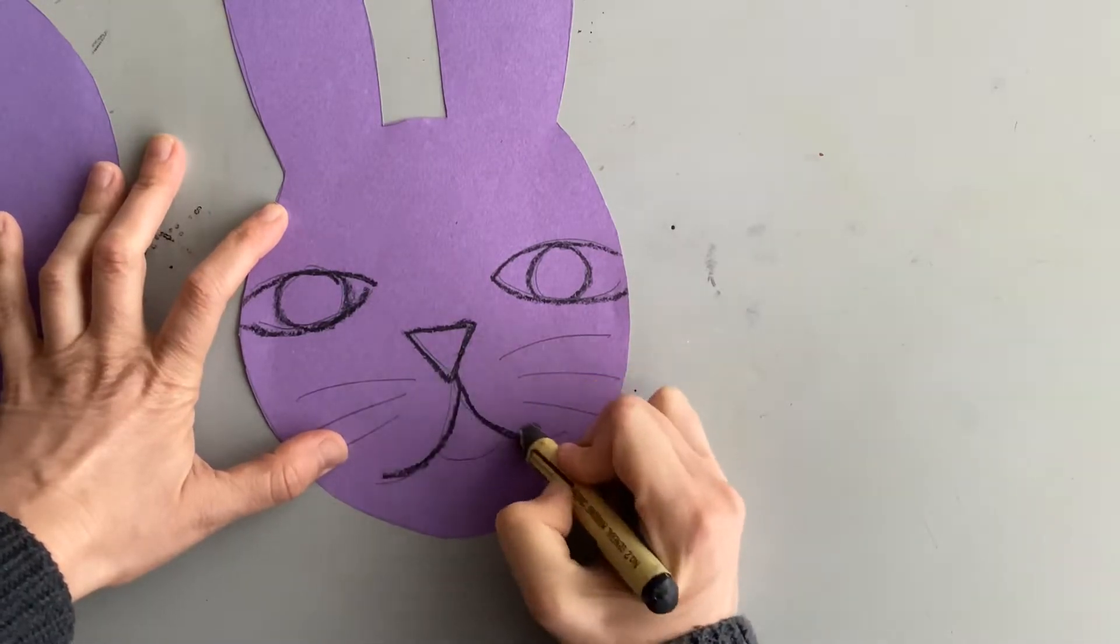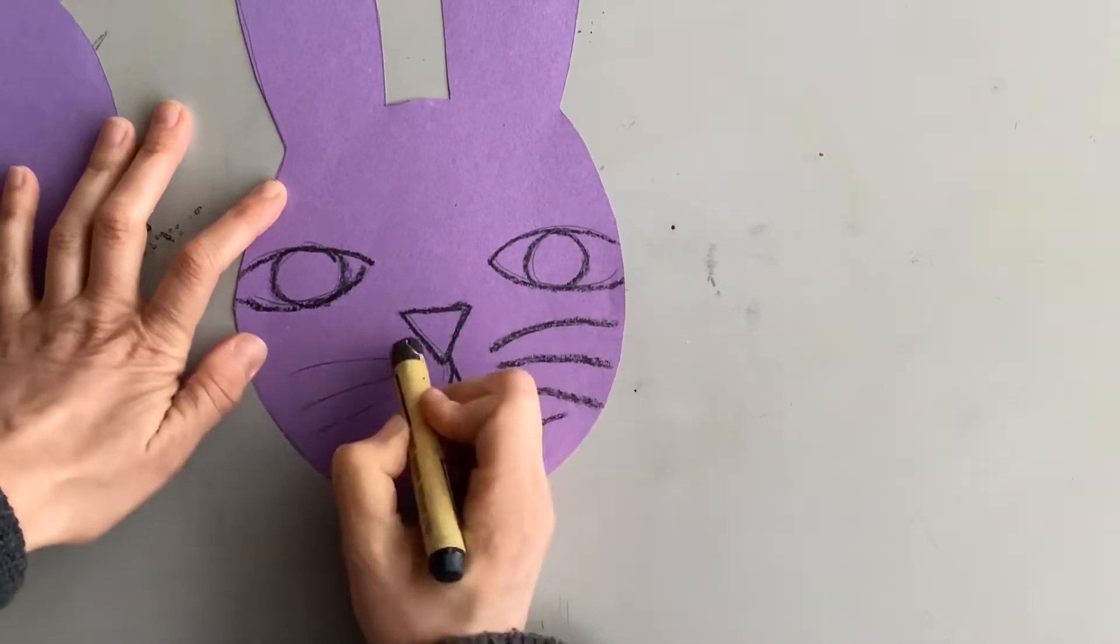Make a triangle nose, two curves for the mouth, and some whiskers.